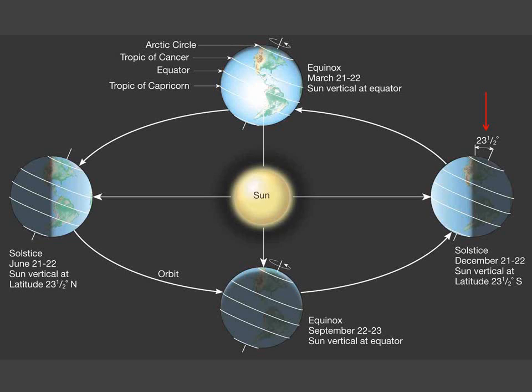Note the red arrow on the right side of the image. The Earth's axis of rotation is tilted 23.5 degrees from vertical with respect to the plane along which it orbits the sun.